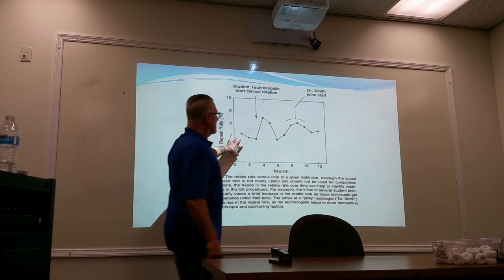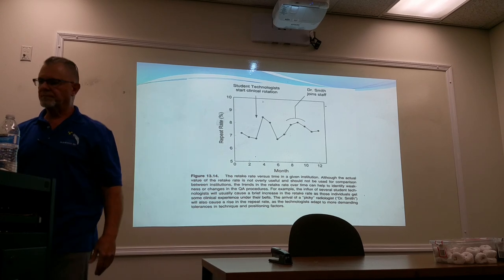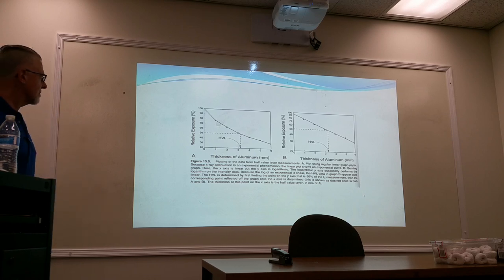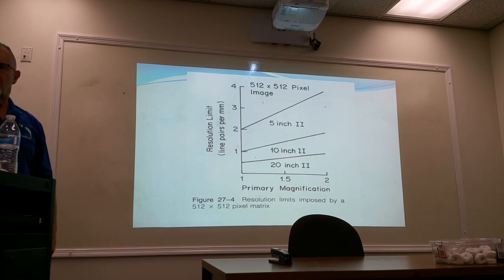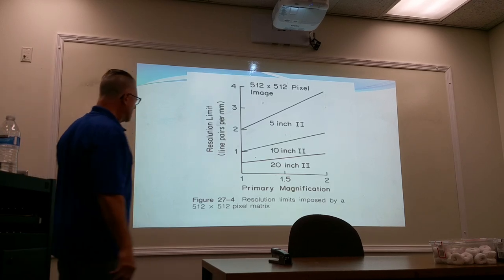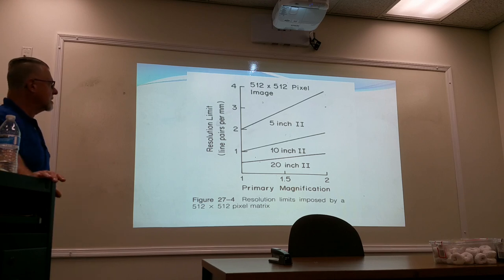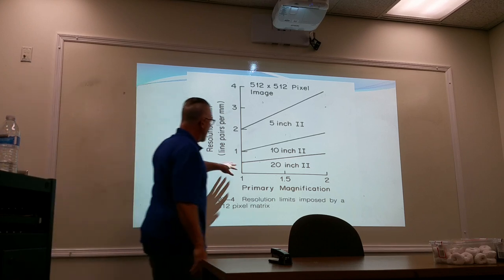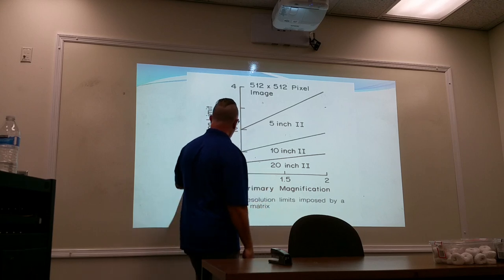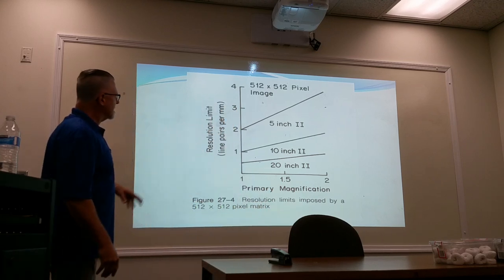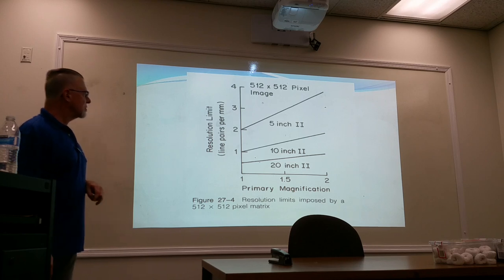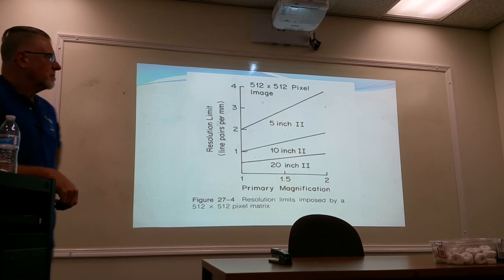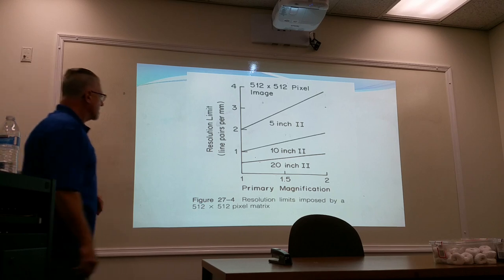This is just a graph of half value layers — how you plot it, not a big deal. There are resolution limits. This is on a 512 by 512 pixel matrix, which is really low now. Depending on how big your image field is, the best you're going to get is maybe around two millimeters, two and a half, maybe a little less than two millimeters of resolution — that would be line pairs of high resolution.